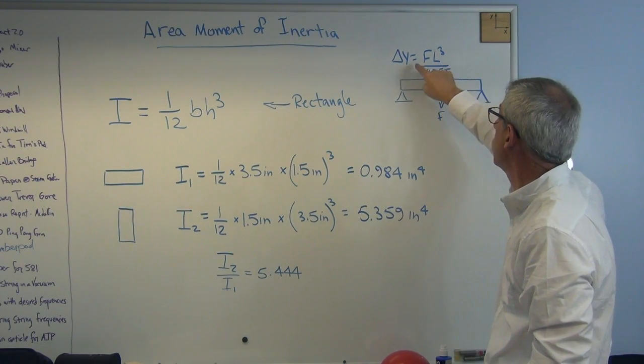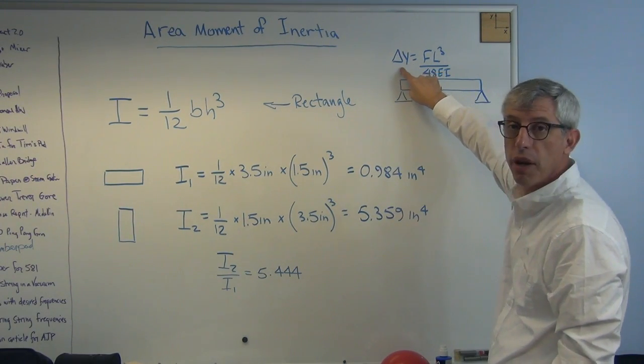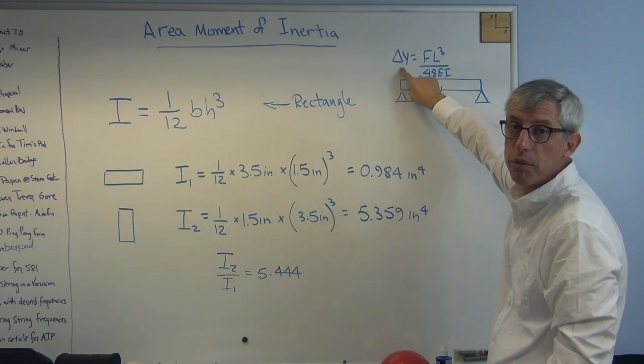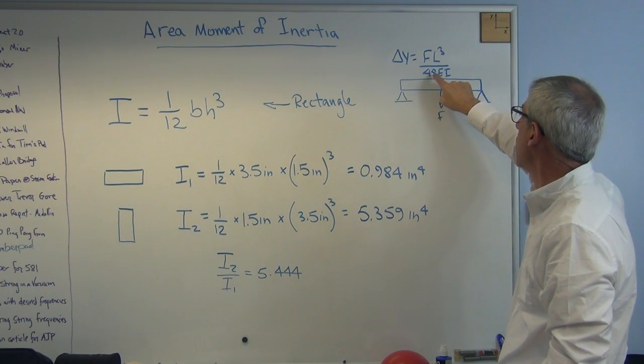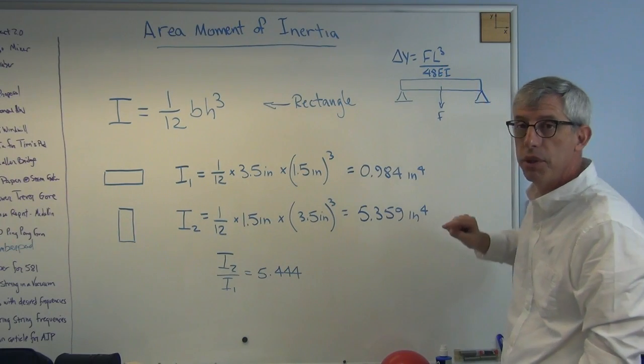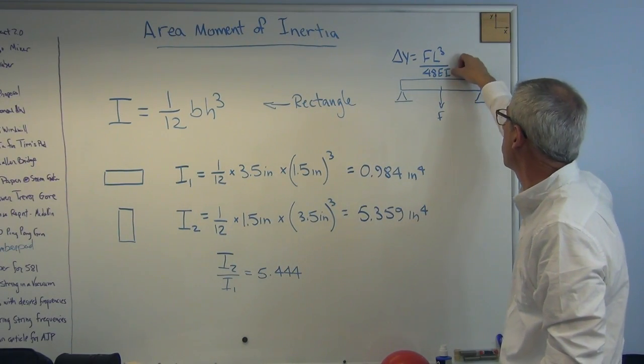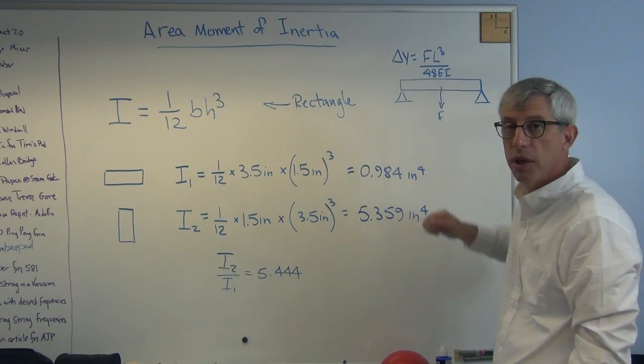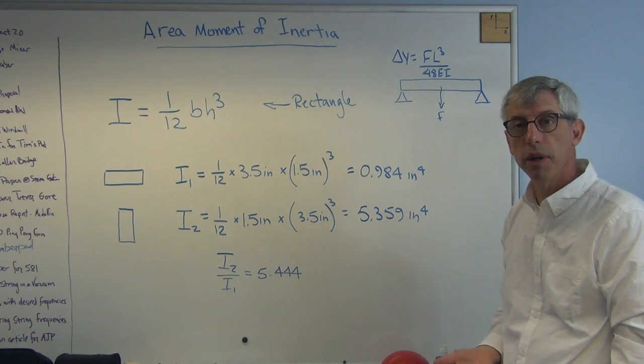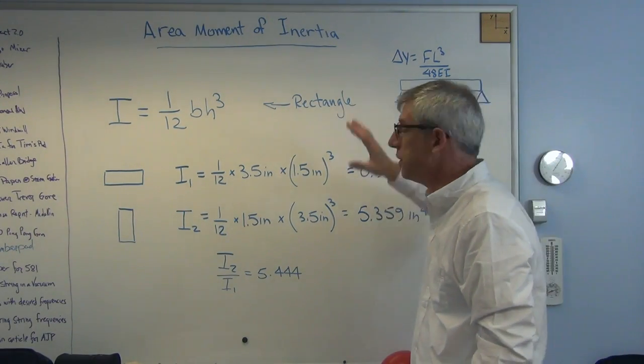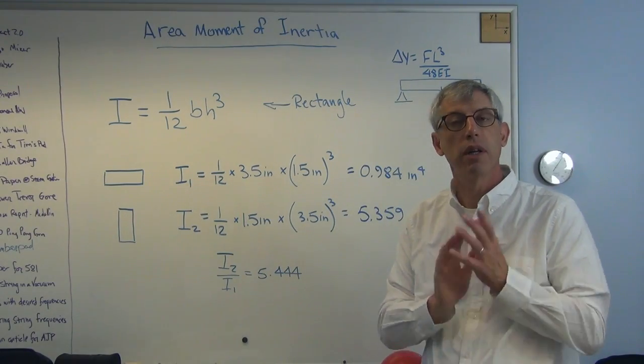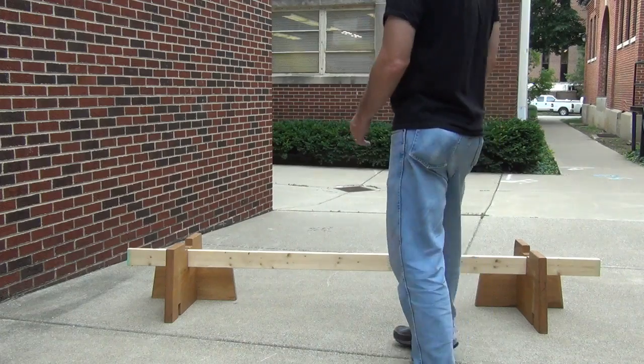If length gets really high, the deformation's going to get really high. Short beams are stiffer than long beams. There's 48, just a constant. There's E, the material property, and there's I. So the bigger I is, the stiffer the beam is, the lower the displacement. But it's nice to sit here on a whiteboard and do this. Let's try it.